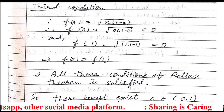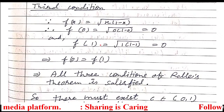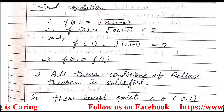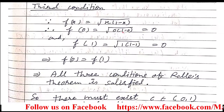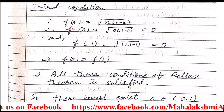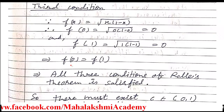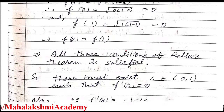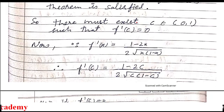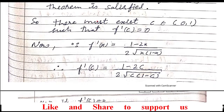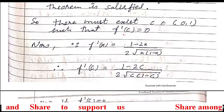The third condition of Rolle's theorem says that the function's value at the lower limit and upper limit should be equal. The lower limit is 0 and upper limit is 1. Substituting, f(0) = root(0·(1-0)) = 0 and f(1) = root(1·(1-1)) = 0. Since f(0) equals f(1), the third condition is satisfied. Therefore there must exist c in the open interval (0,1) such that f'(c) = 0.